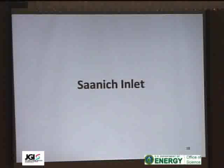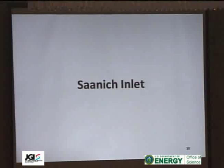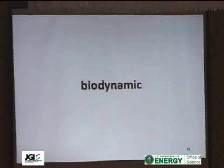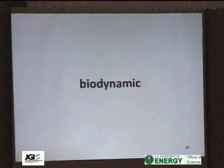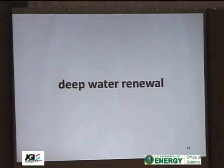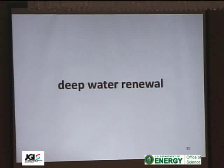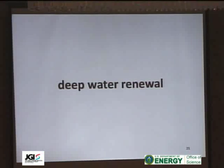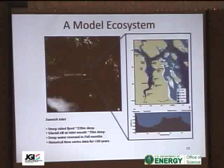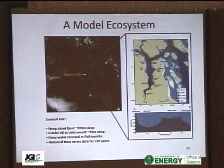I want to take you to a system where we can ask: how are microbes contributing to biogeochemical cycling in oxygen minimum zones? How do we use them as indicators, and to model and monitor these processes so that we can better cope with the consequences? Saanich Inlet is a biodynamic ecosystem that undergoes seasonal stratification and deep water renewal. During spring into summer, there's high primary productivity in surface waters, carbon becomes remineralized by heterotrophic aerobic organisms, and oxygen is depleted, creating a gradient from oxygenated surface to anoxic deep waters.